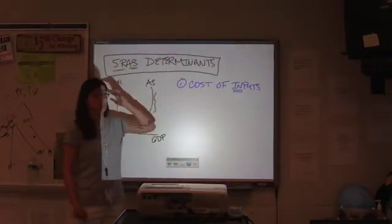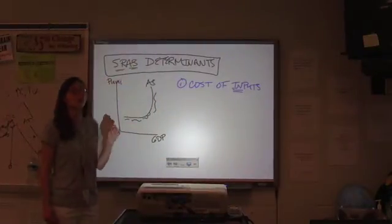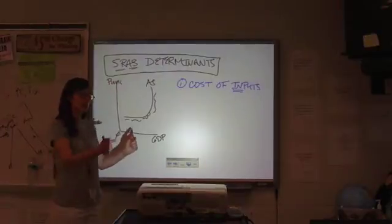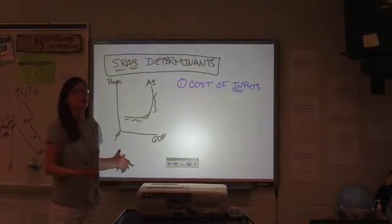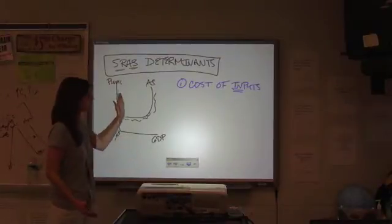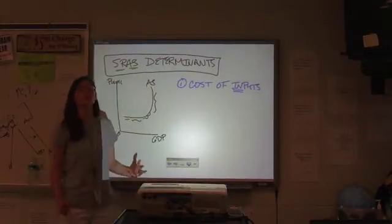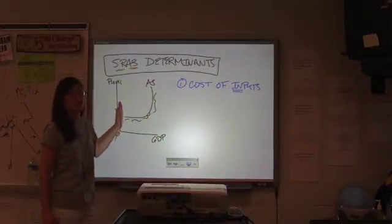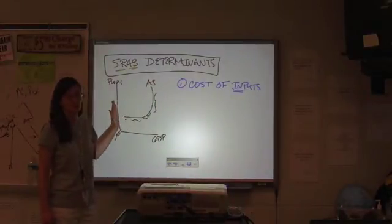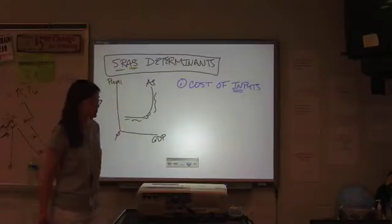So, cost of inputs. If it is cheaper and easier to produce, going back to what we talked about in Unit 1, cheaper and easier to produce, you'll produce more. Aggregate supply shifts to the right. If it gets more difficult and or more expensive, it shifts left. Increase, decrease. That's the first one.